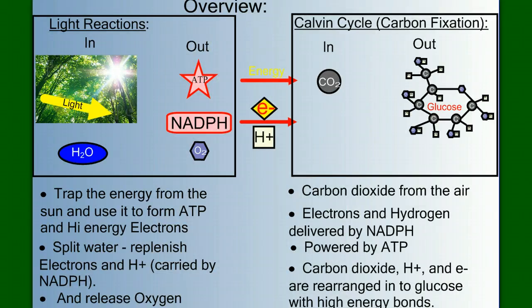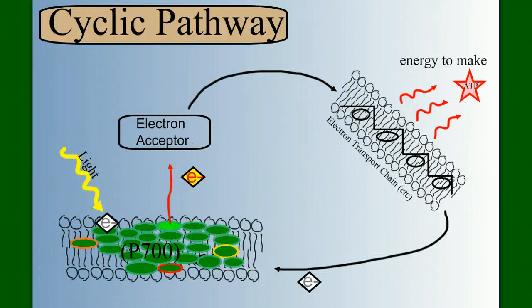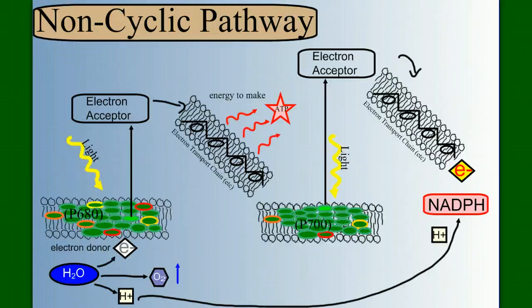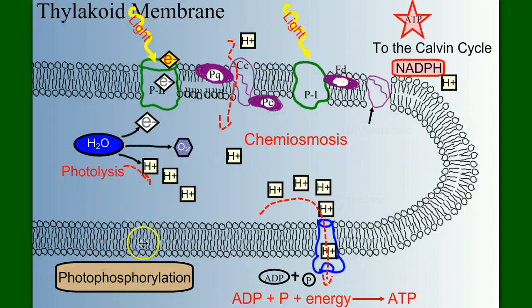We went through and talked about how photosynthesis occurs in two distinct sets of reactions, the light reactions and the Calvin cycle. We took a closer look at the light reactions, both the cyclic and non-cyclic pathways. We showed how ATP and NADPH were produced and how oxygen was given off as a waste product as we absorbed light and split water.